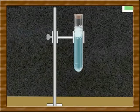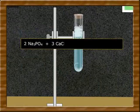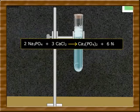2 molecules of sodium phosphate combine with 3 molecules of calcium chloride to form calcium phosphate and 6 molecules of sodium chloride.